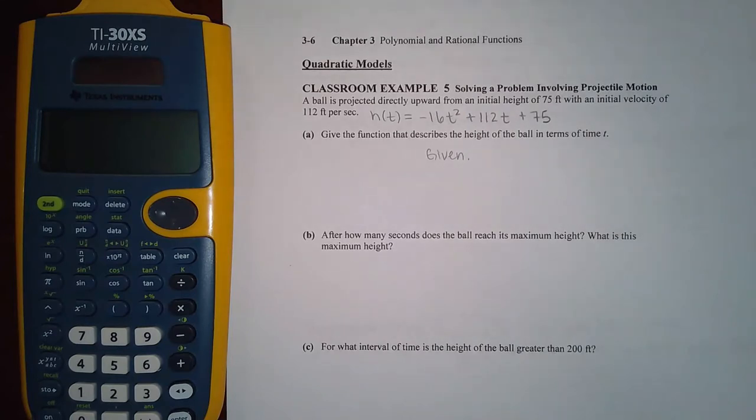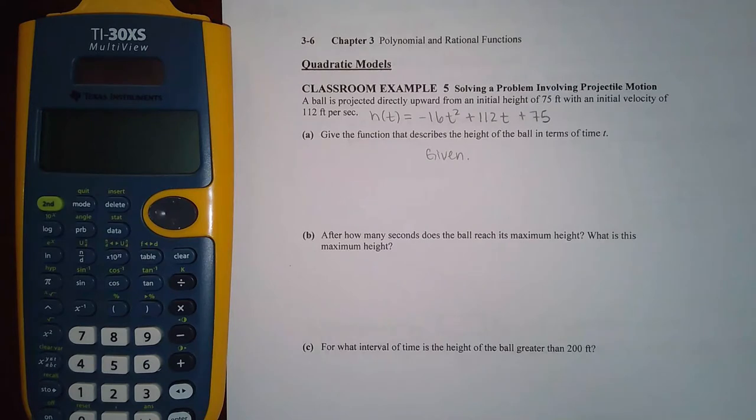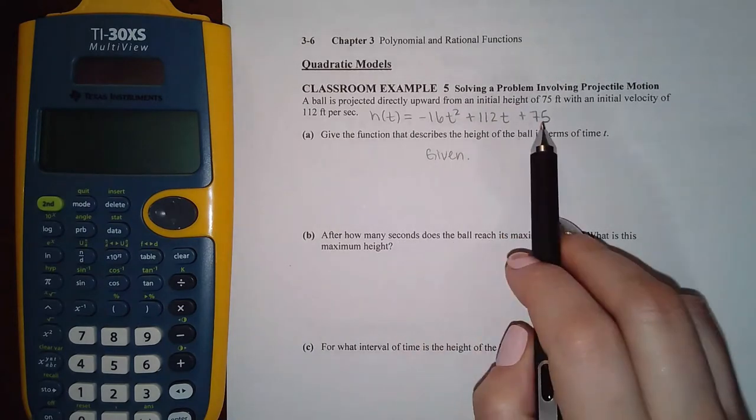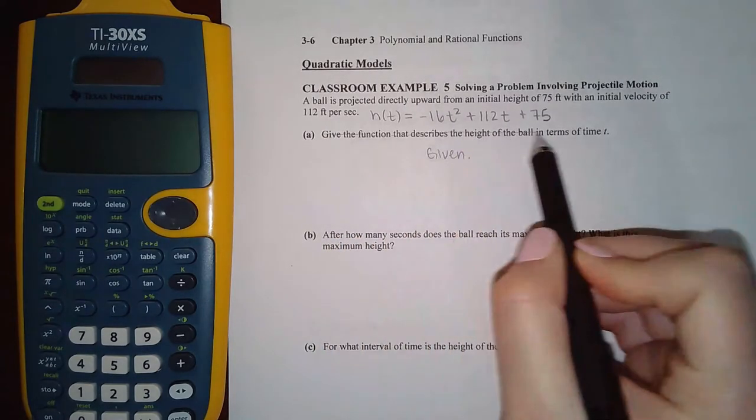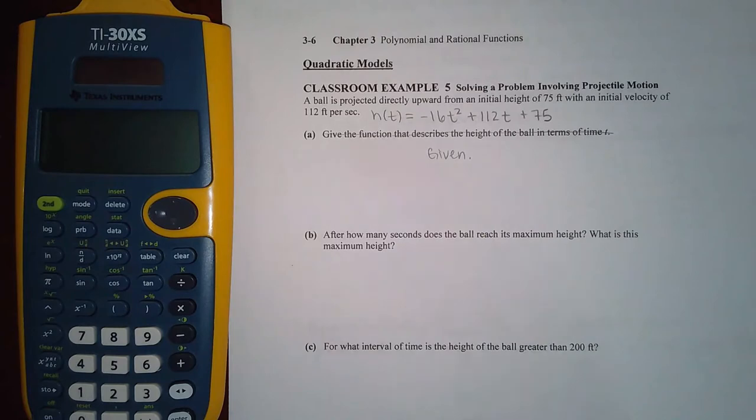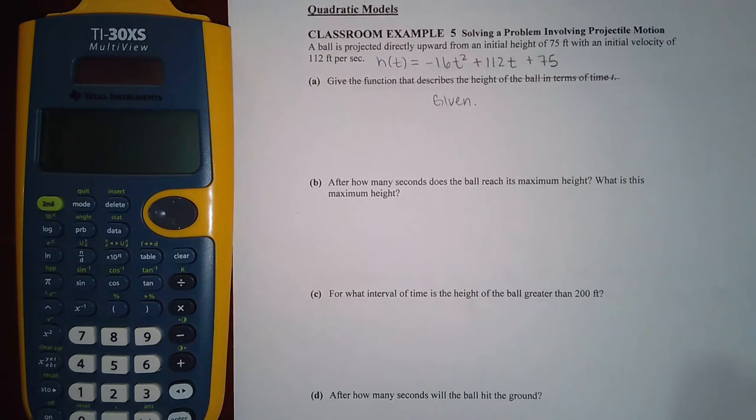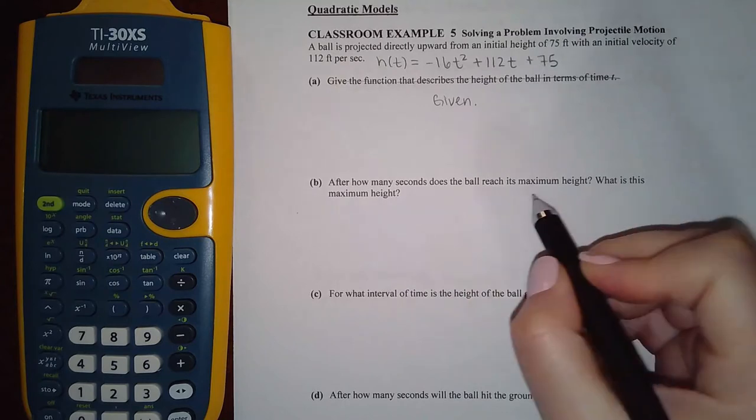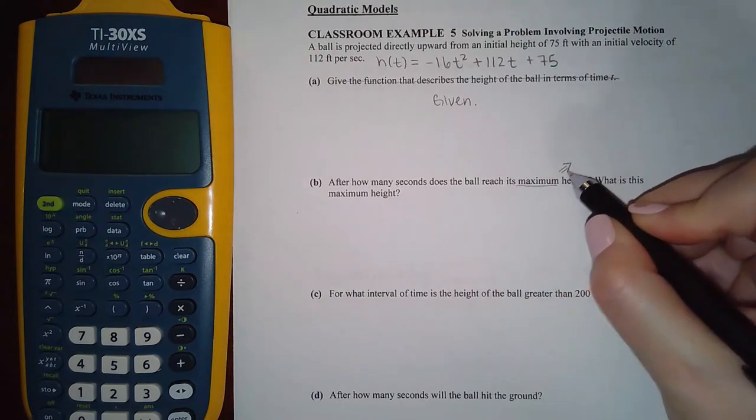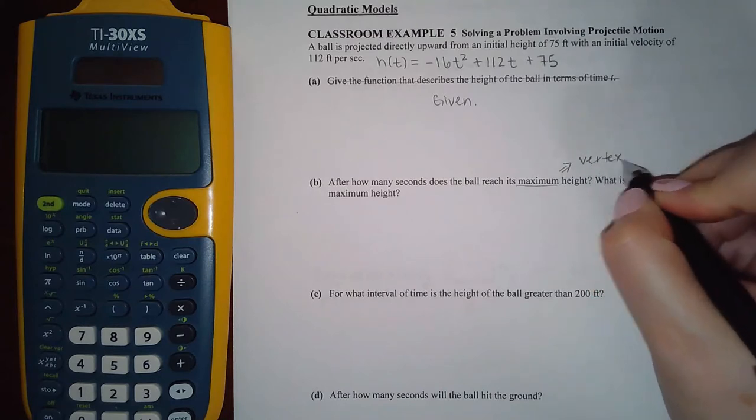Onward, let's go and do this problem. This is our first word problem when it comes to quadratic problems. It says a ball is projected directly outward from an initial height of 75 feet with an initial velocity of 112 feet per second, and they give the function here. So really we don't need to do this part because they're going to be giving you the functions. After how many seconds does the ball reach its maximum height? What is the maximum height? When they're talking about maximums and minimums, that should automatically remind you that they're talking about the vertex.